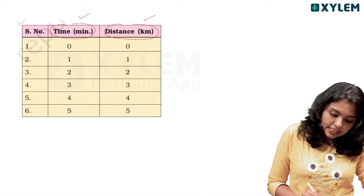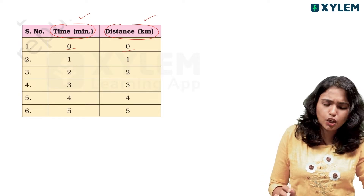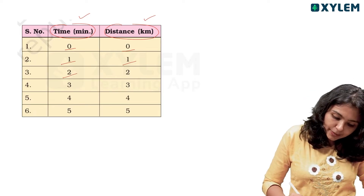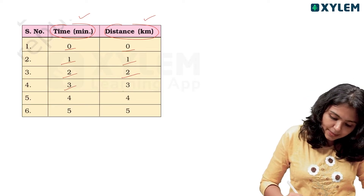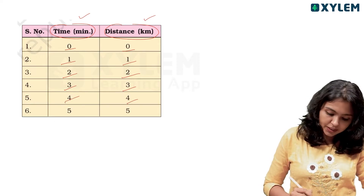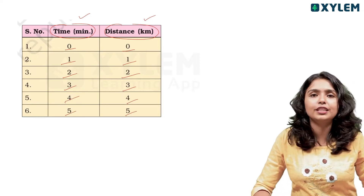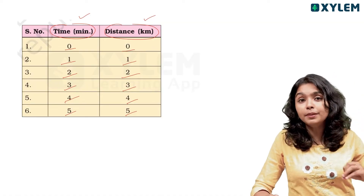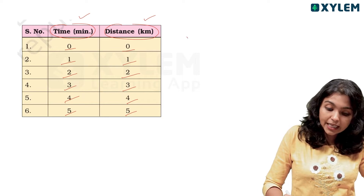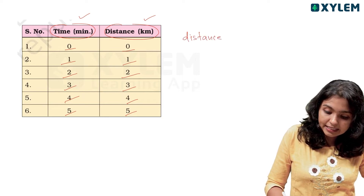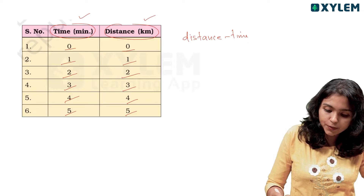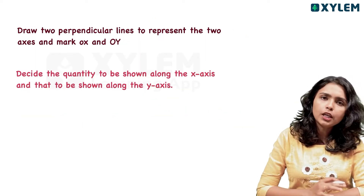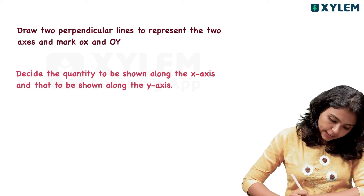At 0 minutes the distance is 0; at 1 minute, 1 kilometer is traveled; at 2 minutes, 2 kilometers; at 3 minutes, 3 kilometers; at 4 minutes, 4 kilometers; at 5 minutes, 5 kilometers. So you are traveling uniformly. Then we look at the distance-time graph — distance is on the y-axis, time is on the x-axis.